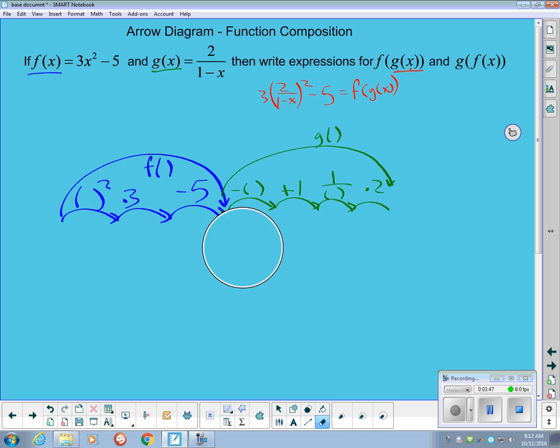And I've got a little x there at the beginning and start over with x at the very front here. And I do what the arrows say to do. So the x gets squared, multiplied by 3, subtract 5.